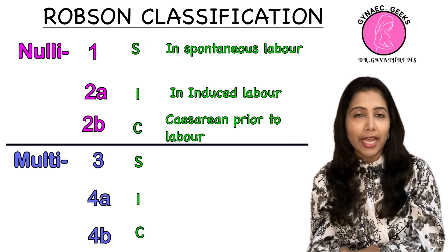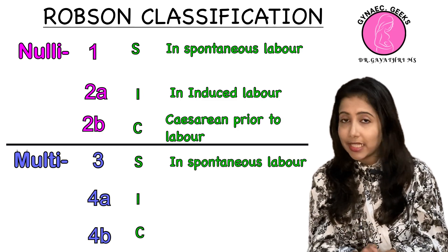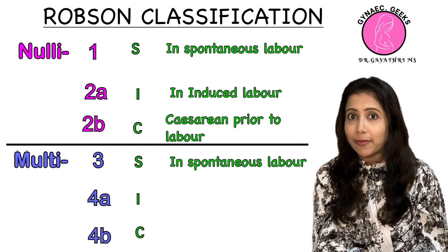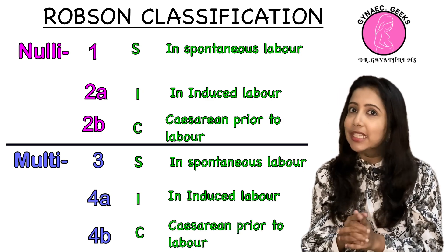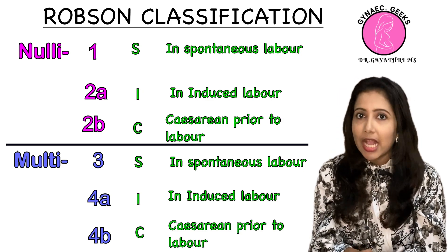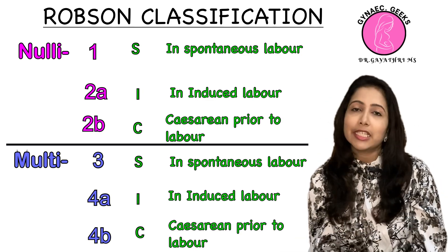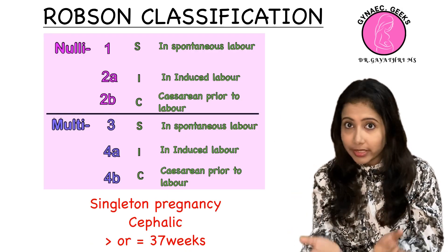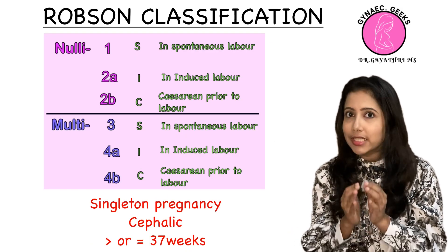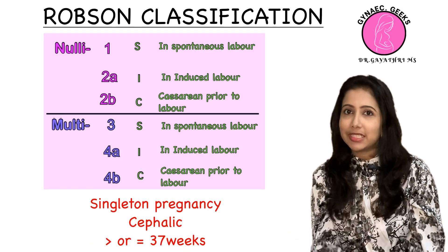Similarly, Groups 3 and 4 are for a multiparous female. Group 3 is spontaneous labour in a multiparous female. Group 4A is induced labour and Group 4B is cesarean section prior to labour. All of Groups 1 through 4 are for singleton women with cephalic presentation.